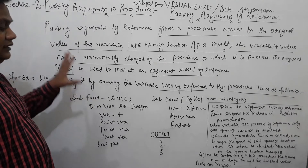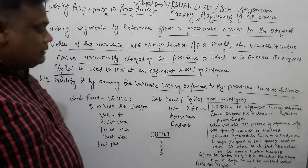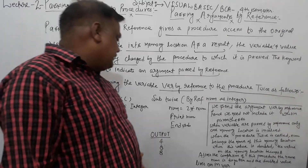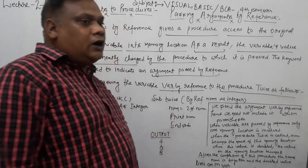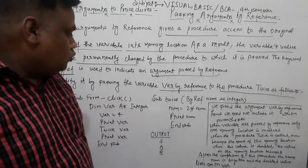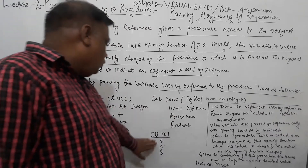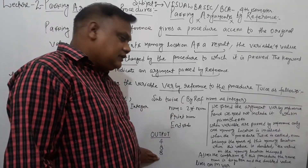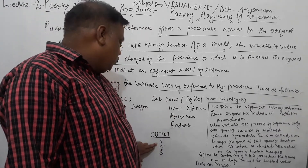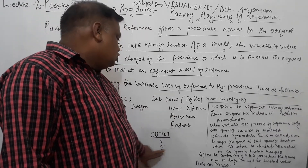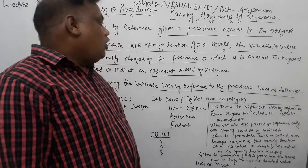So in the first example — by value — the output is 4, 8, 4. But here with by reference, the output is 4, 8, 8. When passing by reference, the value change affects the original memory location.